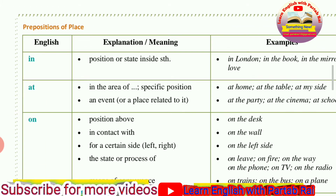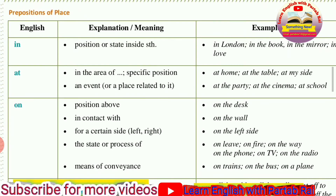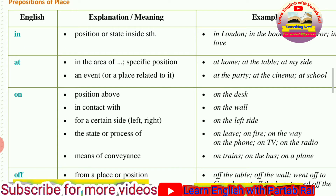Now we talk about the preposition ON. We use ON when something is in a position above and attached to another thing — in contact with it. Keep in mind: we use ON when something is attached to something else. For example: on the desk, on the wall — whatever is on the wall must be attached to the wall. We also use ON when talking about directions: on the left side, on the right side, on the back.